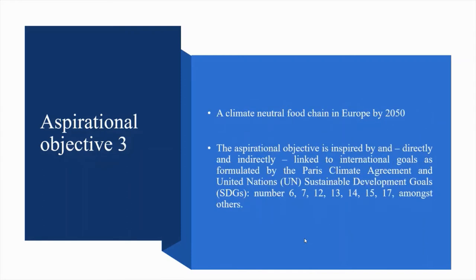Aspirational objective 3: A climate-neutral food chain in Europe by 2050. The aspirational objective is linked to the Paris Climate Agreement and the UN Sustainable Development Goals: SDG 6 Clean Water and Sanitation, SDG 7 Affordable and Clean Energy, SDG 12 Sustainable Production and Consumption, SDG 13 Climate Action, SDG 14 Marine Protection, SDG 15 Biodiversity, and SDG 17 Partnerships.